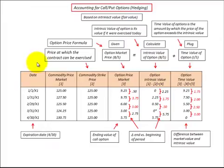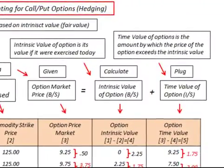Before we start our example, the accounting treatment for options depends on whether the option was purchased as a hedge against price fluctuations or for speculation on trading the option. We'll be going over the option here as a hedge against prices. The example for calculating the intrinsic values and the time values are based on commodity prices, but it would be the same for purchasing a financial instrument like stocks.